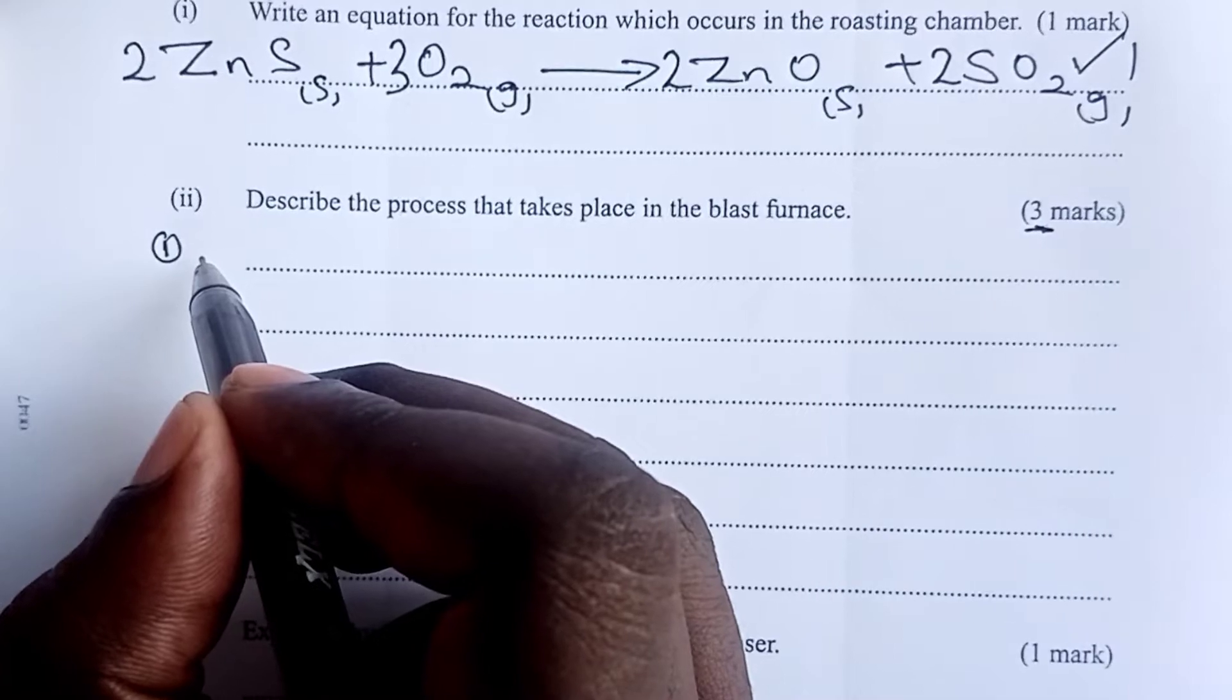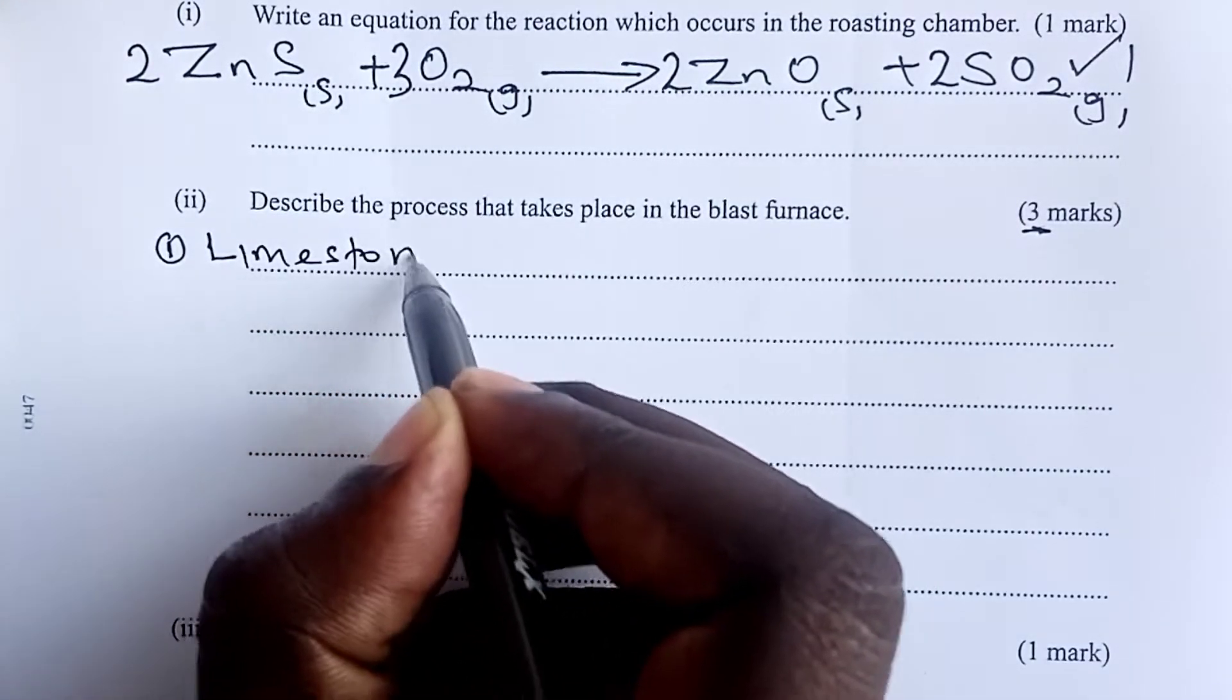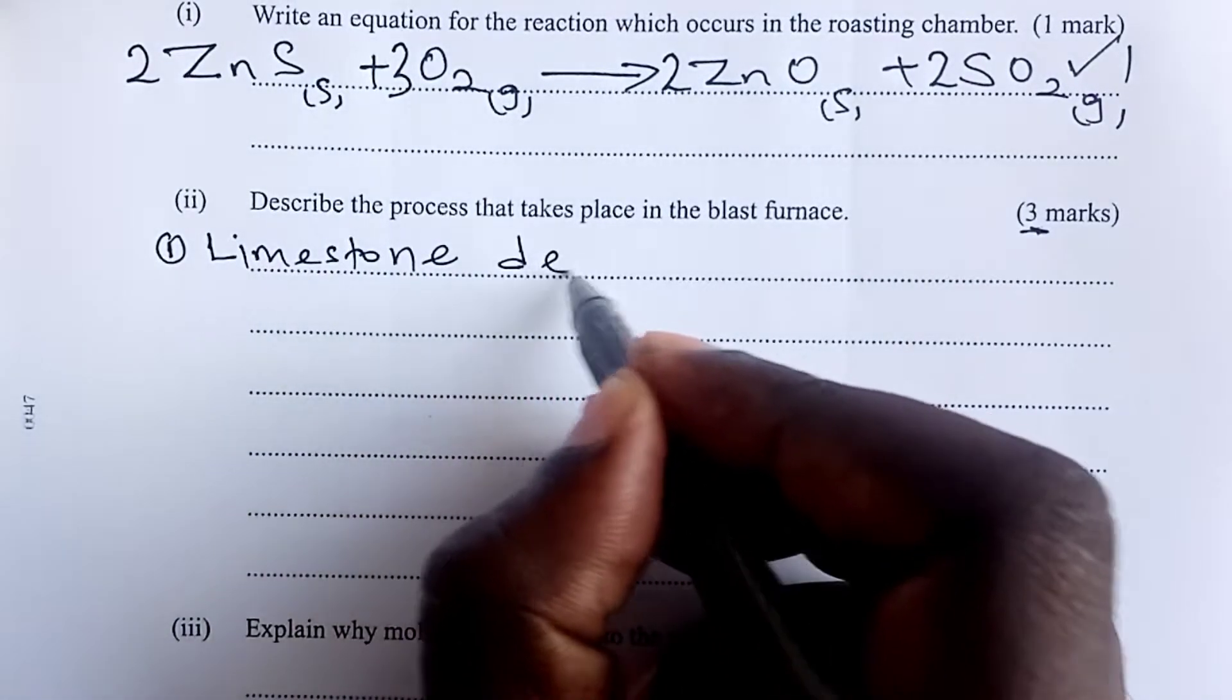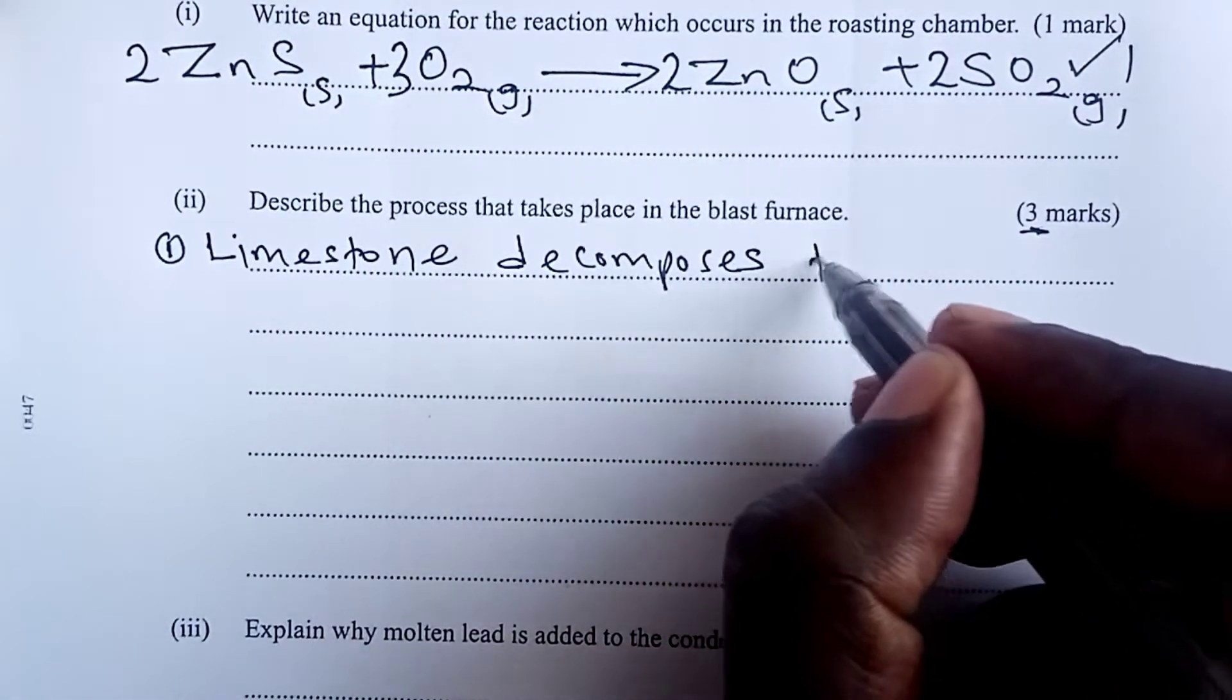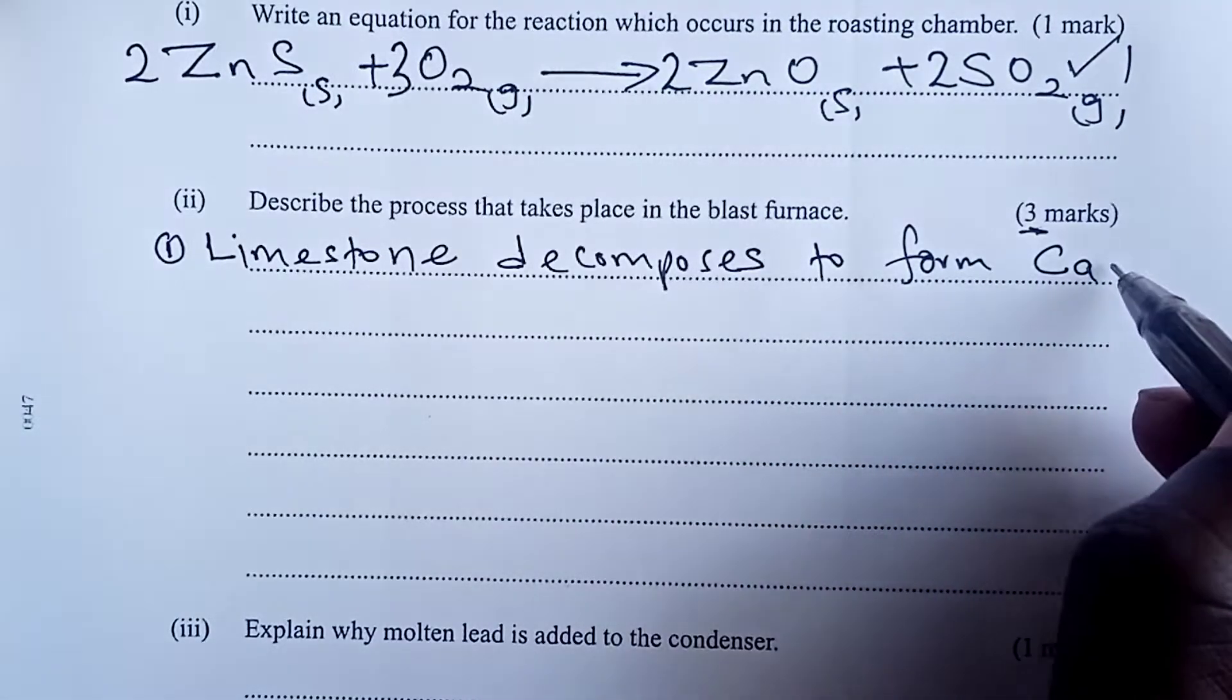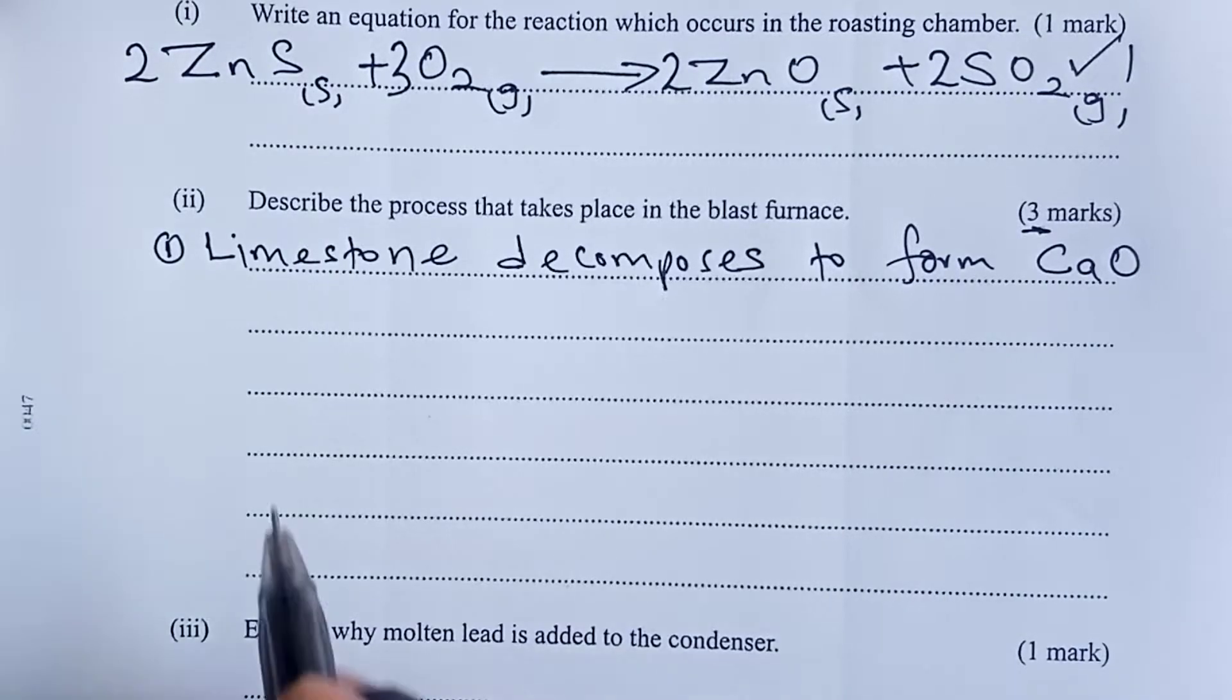The first process is that limestone, which you can also call calcium carbonate, decomposes. Calcium carbonate or limestone decomposes to form calcium oxide, of course, with some carbon-4-oxide as well.